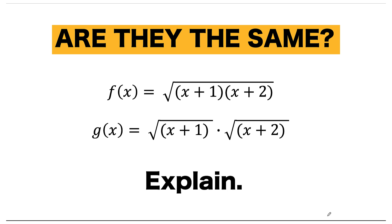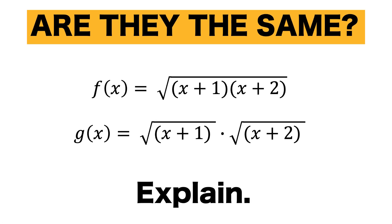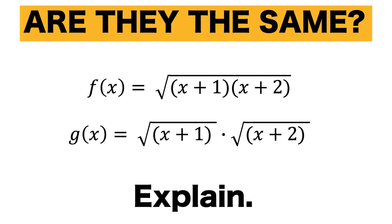Hi guys, I have an easy problem for you today. Let's say we are given two functions f and g, where f(x) is equal to the square root of the quantity (x+1)(x+2), whereas g(x) is the product of two radicals: the square root of (x+1) times the square root of (x+2). Now the question is, are these two functions f and g the same? Explain.